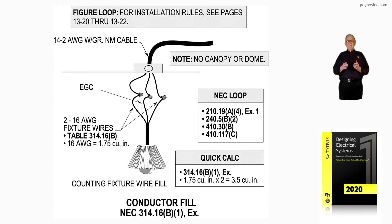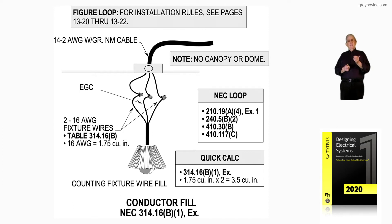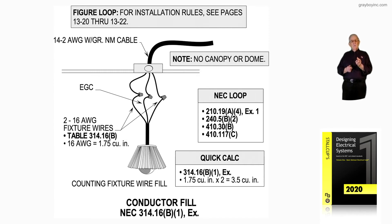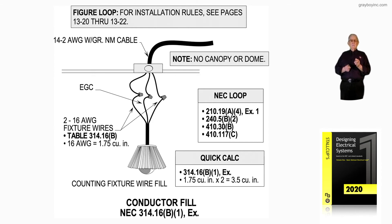But if you apply the exception, then there are some permissive rules given, as we'll see — the NEC covers it all. 210.1984 exception 1 allows these smaller fixture wires to be connected to the larger conductors, number 14 or number 12. 240.5B2 deals strictly with the fixture wire. 410.130B and 410.117C deal with luminaires in accordance with Article 410, giving you the overall picture.